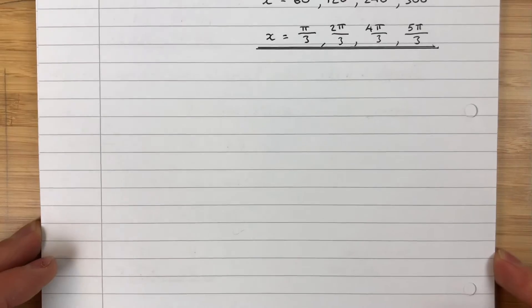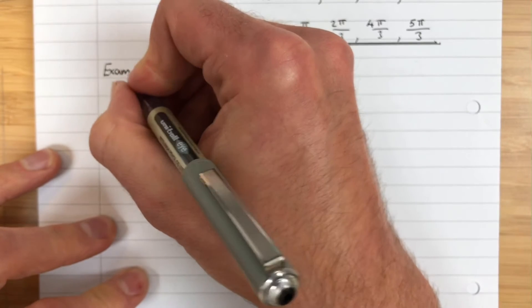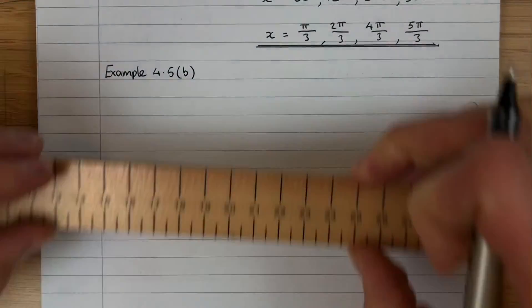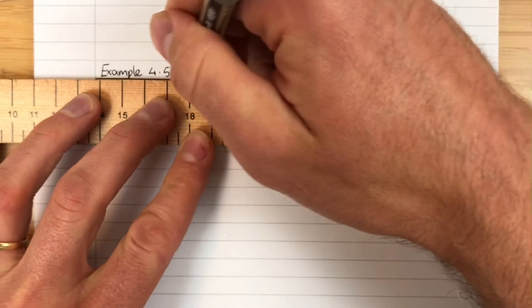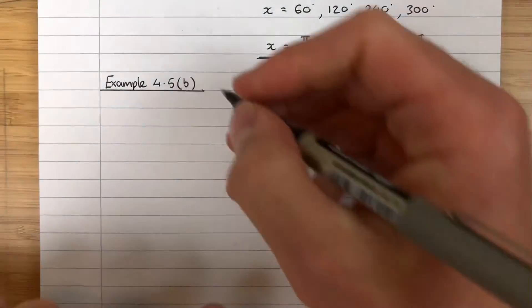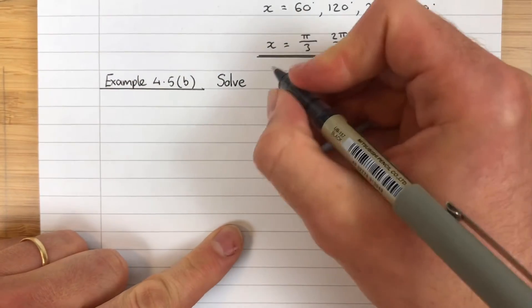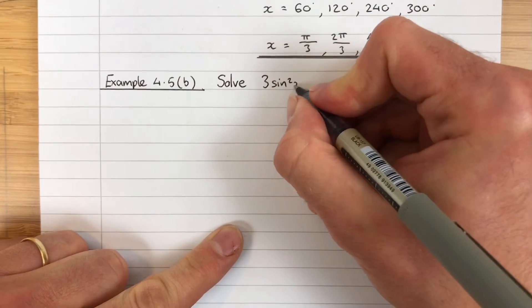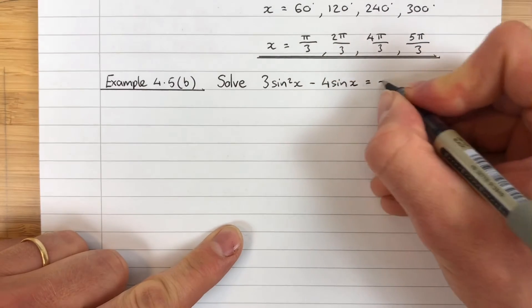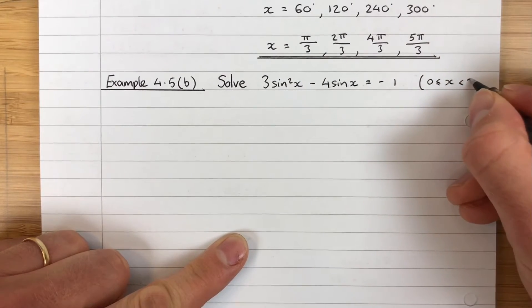I'm just going to go straight into Example 4.5b because this is the main event, this is the really chunky stuff now. You will love this once you master it. Example 4.5b: Solve 3sin²x - 4sinx = -1 for 0 ≤ x ≤ 360.